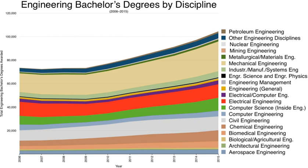Engineering training in Kenya is typically provided by universities. Registration of engineers is governed by the Engineers Registration Act. A candidate qualifies as a registered engineer (R.Eng.) if he or she holds a minimum four-year post-secondary engineering education and a minimum of three years of post-graduate work experience. All registrations are undertaken by the Engineers Registration Board, a statutory body established through an act of the Kenyan Parliament in 1969.